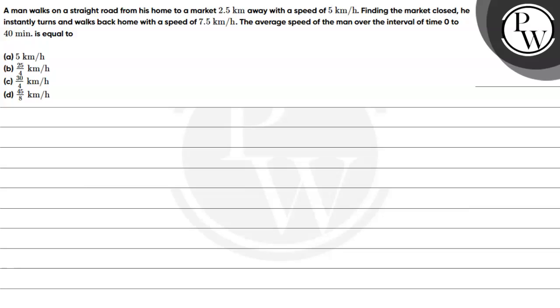Hello, let's read this question. This question says, a man walks on a straight road from his home to market 2.5 km away with a speed of 5 km per hour.